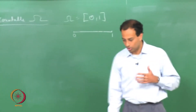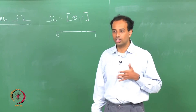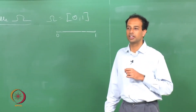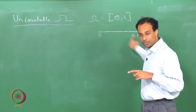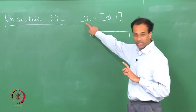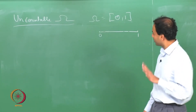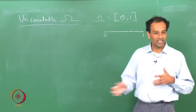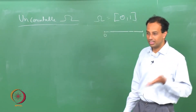In more formal terms, we want to assign a uniform probability measure on the [0,1] interval, which is uncountable. Now in this case, if you take 2^omega — the set of all possible subsets of the [0,1] interval — it is a very huge collection of sets. In fact, Cantor showed that the power set of any set has a strictly bigger cardinality than the set itself, so 2^omega has strictly bigger cardinality than the real numbers.